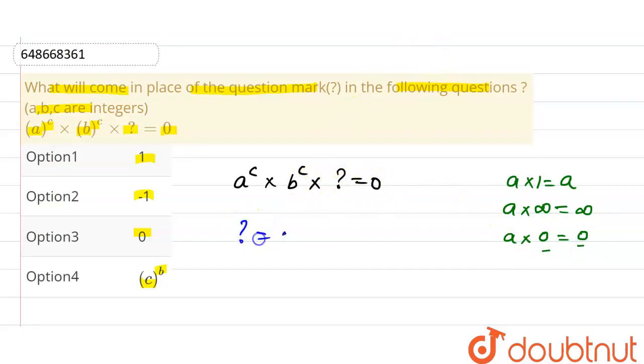So what will be the question mark? Zero. What will be the answer? Question mark equals zero is the right answer. Option 3 is correct. Thank you.